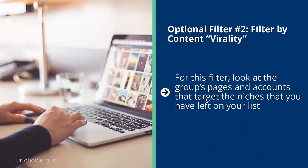Optional filter number two: filter by content virality. Look at the groups, pages, and accounts that target the niches still on your list. Look at the engagement levels of the content in those accounts. Does it seem like there's an organic, active community built around these niches? If yes, keep the niche. If no, you might want to get rid of it. If at least the main five selection factors are present, there's a strong likelihood your business will be successful.